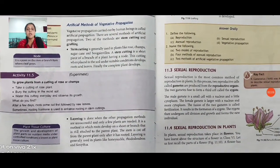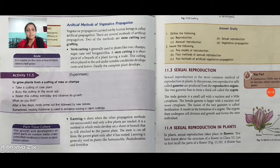Then layering. Layering is done when other propagation methods are unsuccessful and only a few plants are needed. It is a method in which roots develop on a shoot or branch that is still attached to the parent plant. The stem is cut off from the parent plant only after it has rooted. Layering is generally used in plants like honeysuckle.